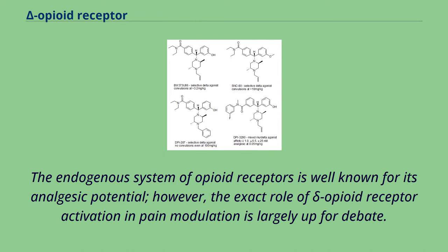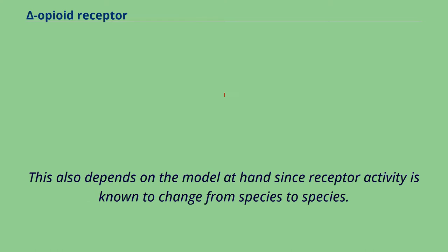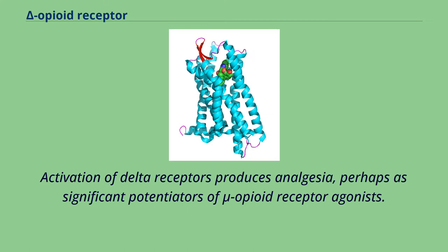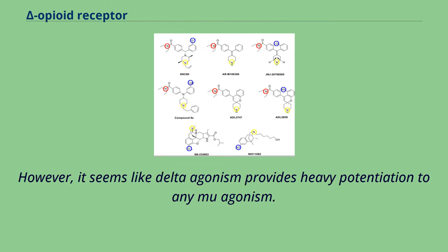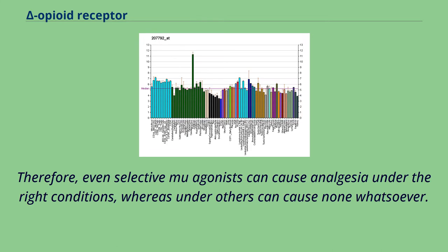The endogenous system of opioid receptors is well known for its analgesic potential; however, the exact role of Delta Opioid Receptor activation in pain modulation is largely up for debate. This also depends on the model at hand, since receptor activity is known to change from species to species. Activation of Delta Receptors produces analgesia, perhaps as significant potentiators of Mu Opioid Receptor agonists. It seems like Delta agonism provides heavy potentiation to any Mu agonism; therefore, even selective Mu agonists can cause analgesia under the right conditions, whereas under others can cause none whatsoever.